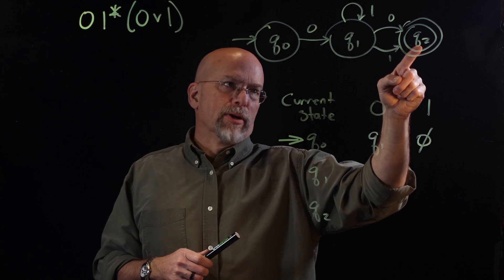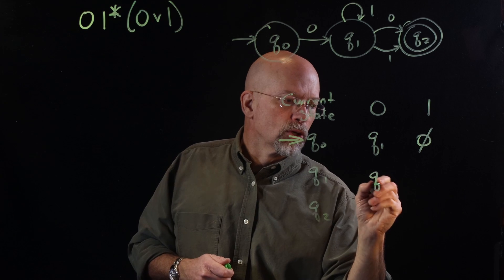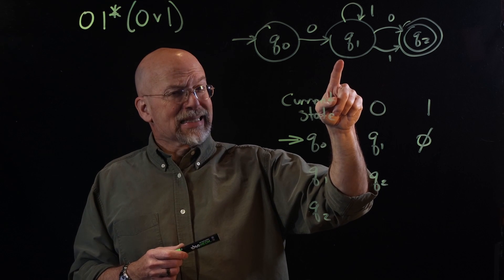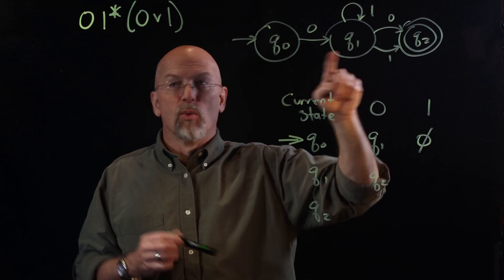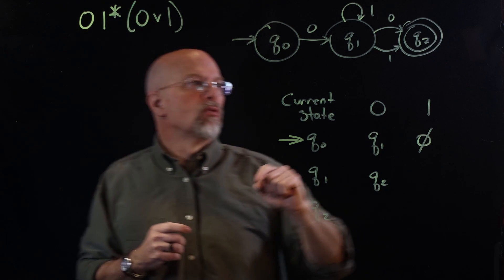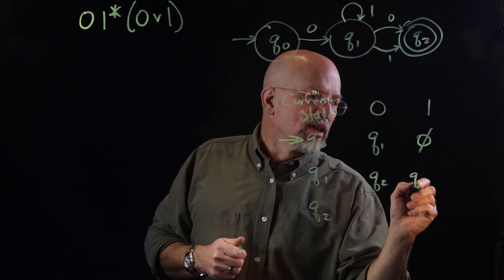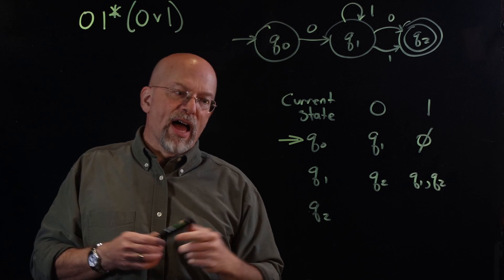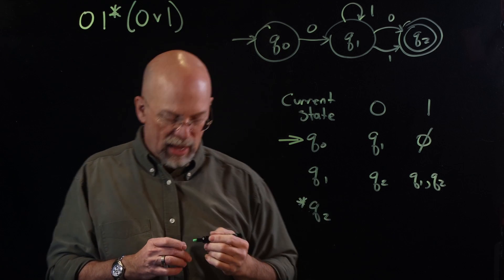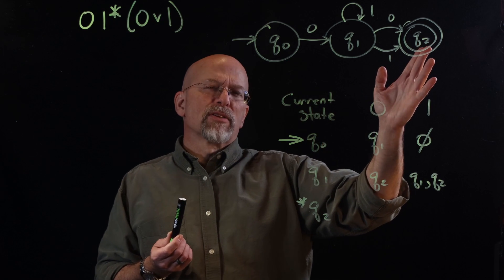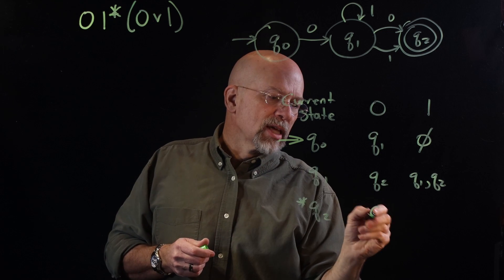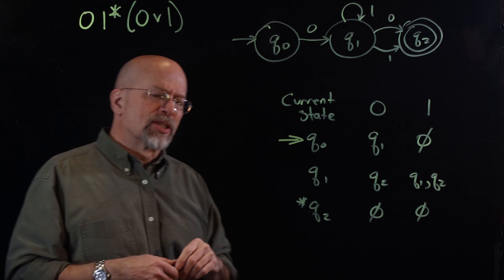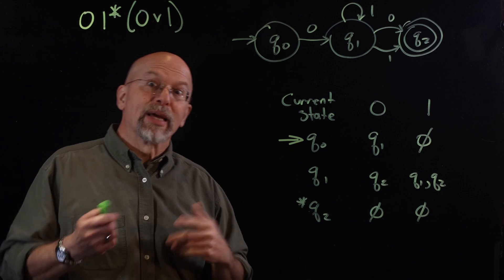Let's take a look at Q1. When we're in Q1 and we get a zero, there's one transition — we are going to Q2. If we get a one while we are in state Q1, it's not as definite: we could be coming back to Q1 for more ones from the string, or we could be going to Q2. So what we actually have is a set — we could be going to Q1 or Q2. Now in Q2, which is our final state — identified with an asterisk in the state transition table — if we get a zero or a one, there are no transitions out of it, so we use the empty set.